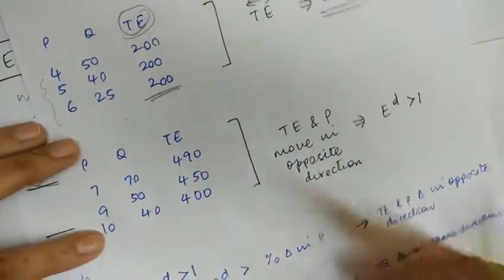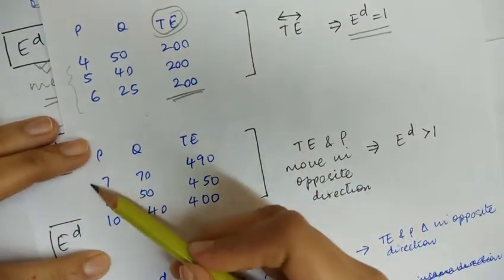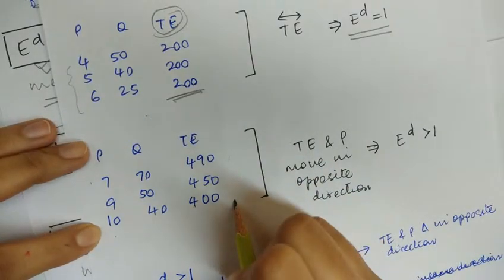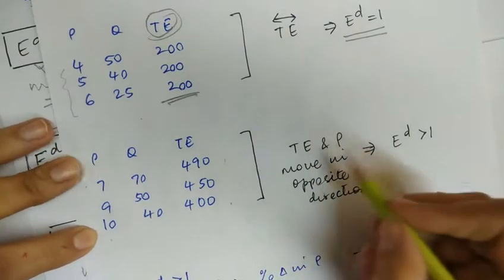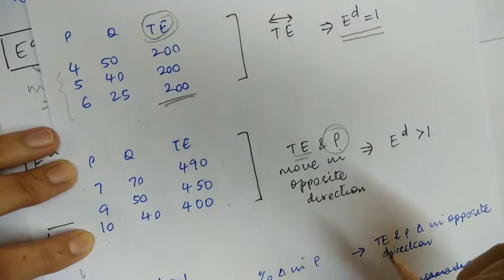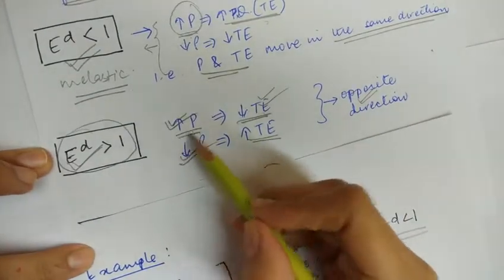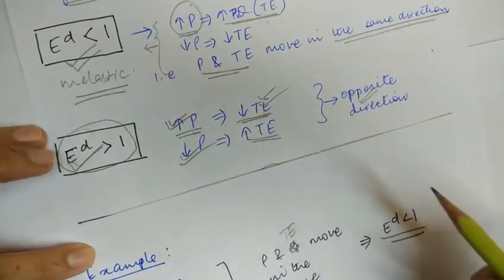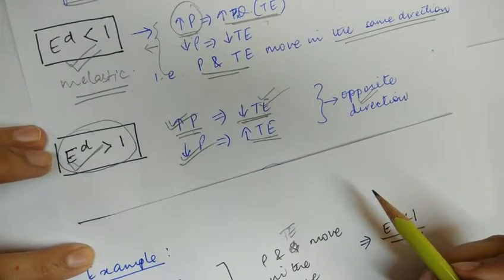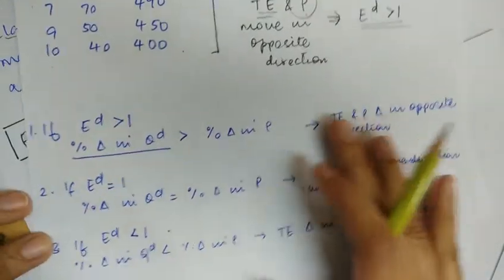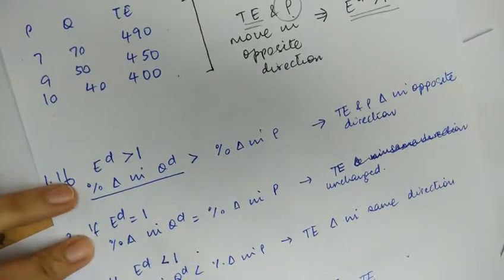In the third example, with the increase in price of the commodity, the total expenditure on the commodity is falling — that is, total expenditure and price are moving in the opposite direction. This means that the elasticity of demand is greater than one. When price and total expenditure move in opposite directions, elasticity of demand is greater than one.